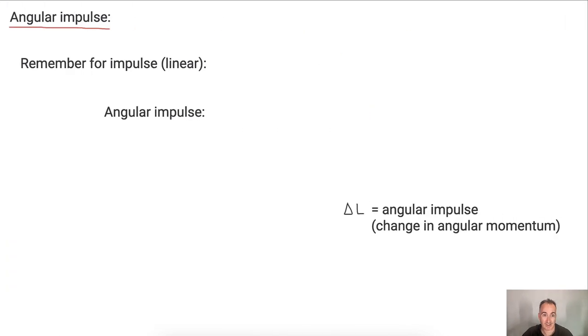All right, so let's look at this. We've got something called angular impulse as well. Remember the equation that we had for regular impulse? So for linear impulse, we had this quantity J, which was equal to F times delta T, which is equal to delta P. So this is the force times the change in time, which is also equal to the change in momentum.